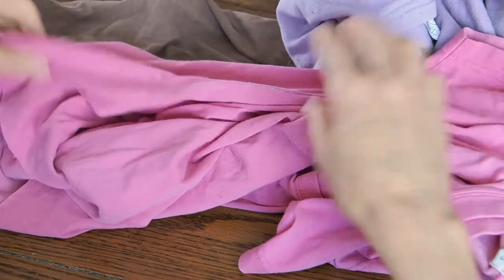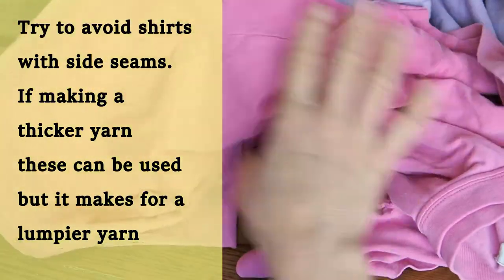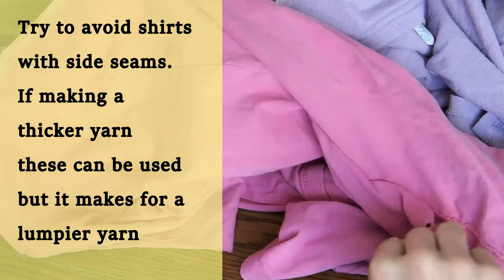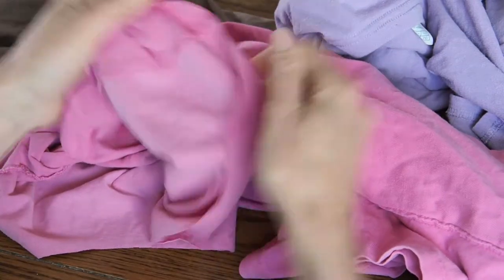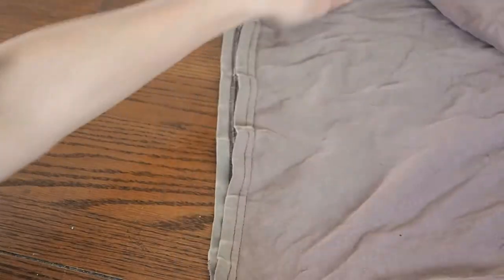Another thing to watch for in your t-shirts is if they have a side seam or not. You can use a t-shirt with a side seam, especially if you're making something with a thinner yarn, then that seam will show up. So it's best to use one without side seams.